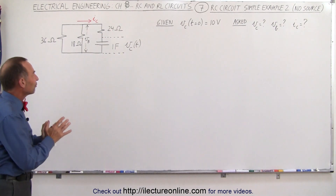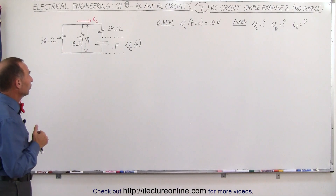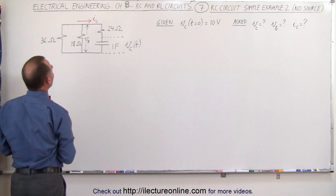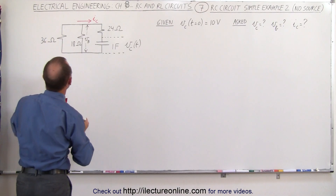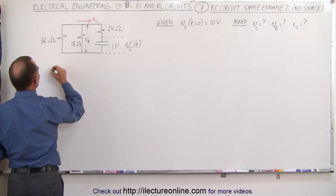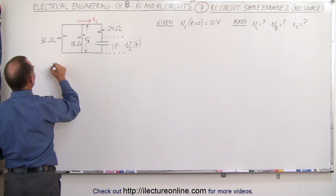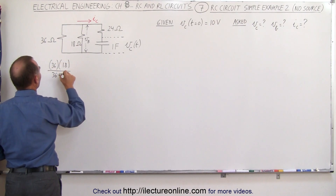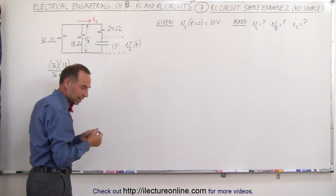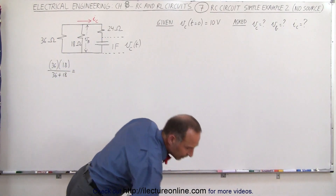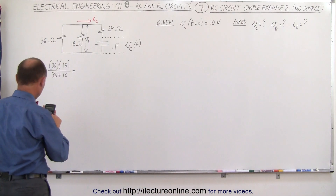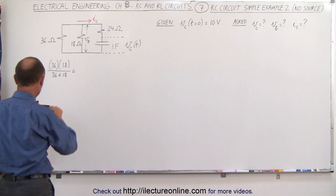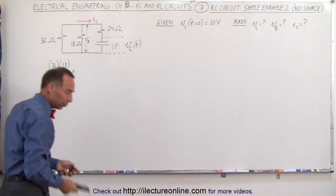What we need to do first is find the equivalent circuit. Since there are two resistors in parallel, we can find their equivalent resistance by taking the product over the sum. We take 36 times 18 divided by 36 plus 18 — that would be 54 — and that gives us 12 ohms.